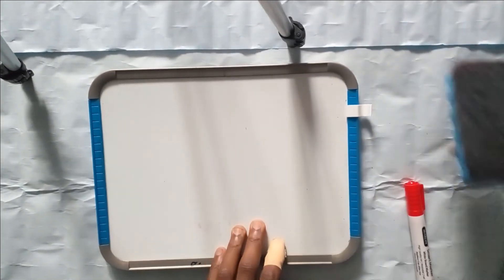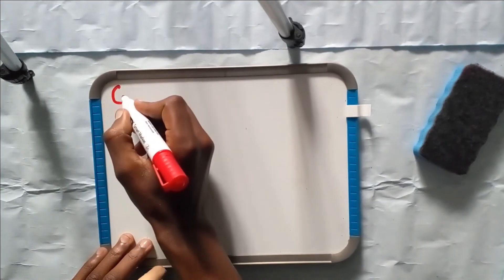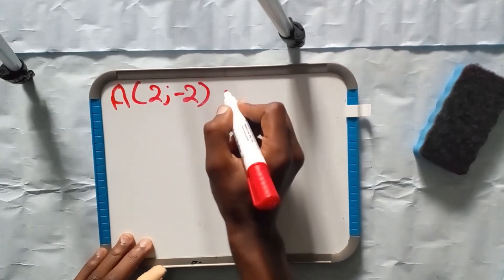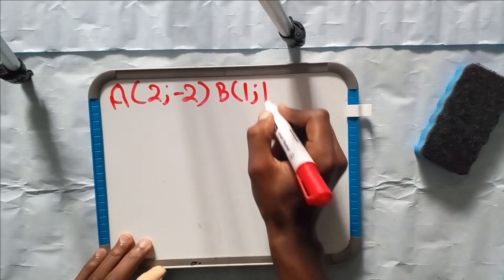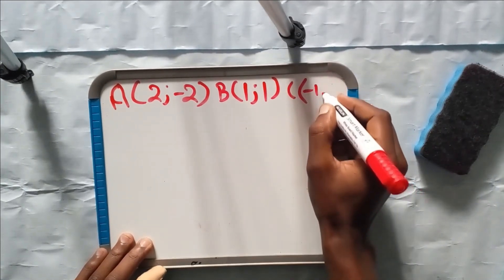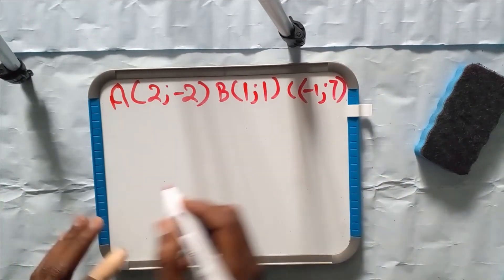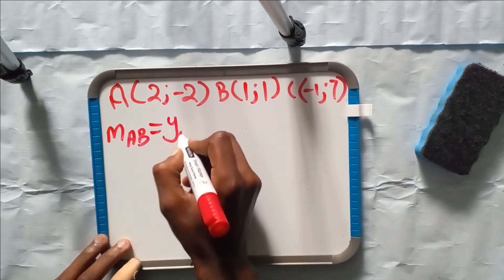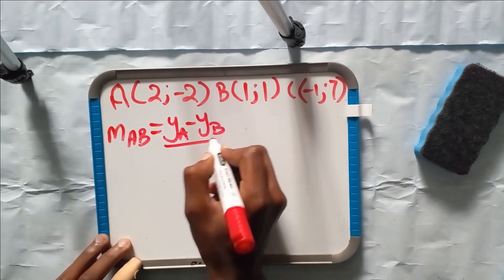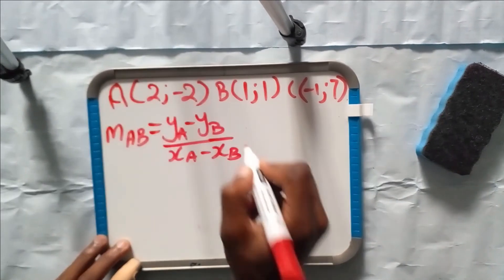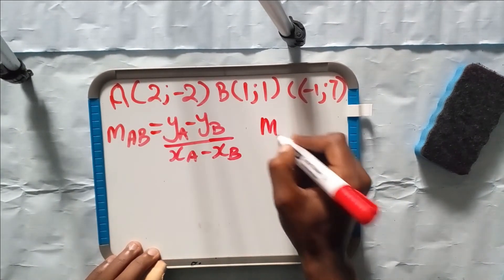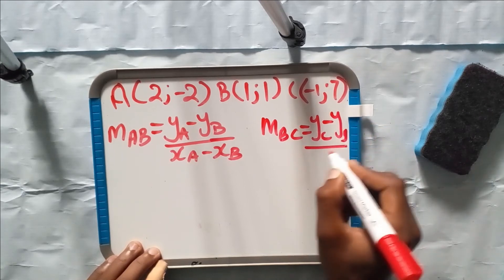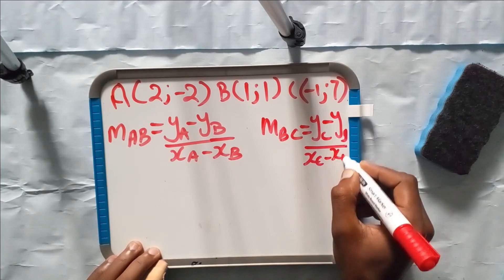Point A is (2, -2), point B is (1, 1), and point C is (-1, 7). We calculate the gradient of AB, which equals y_A minus y_B all over x_A minus x_B. On the other side we have the gradient of BC, which equals y_C minus y_B all over x_C minus x_B.